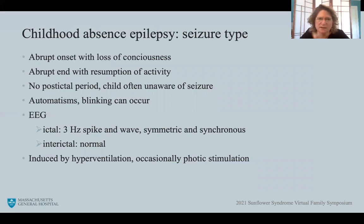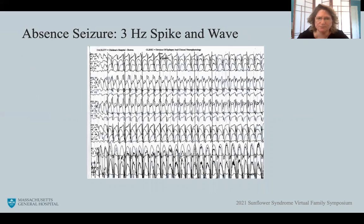The EEG is classic during a seizure: three hertz spike-and-wave activity that is symmetric and synchronous across all EEG leads. Typically the interictal EEG — when the individual is not having a seizure — is normal. Classically, absence seizures can be induced by hyperventilation and occasionally by photic stimulation. The EEG shown illustrates the typical three hertz spike-and-wave activity during an absence seizure, with each vertical line representing one second.